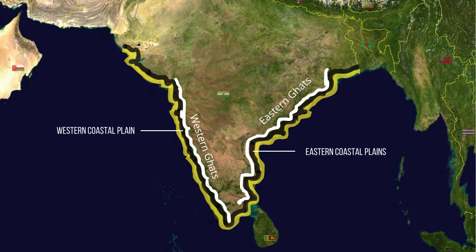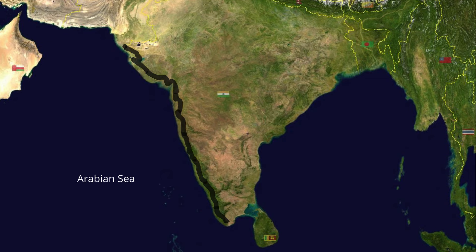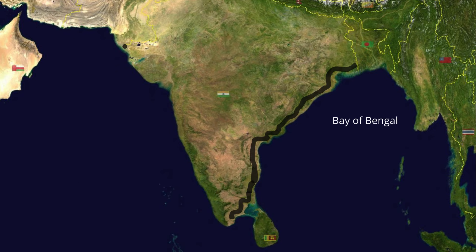The coastal plains in India are along the west and east of the country. These plains can be categorised into two types: the western coastal plains of India, which run along the Arabian Sea, and the eastern coastal plains of India, located alongside the Bay of Bengal.